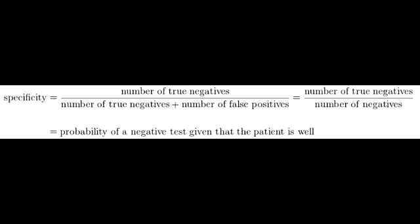The mnemonic to remember specificity is NIH (negative in health) and SPIN (specificity rules in disease). In 100% specificity, false positive is 0, so all positives must be true positives. The equation TN over (TN + 0) = 1, giving 100% specificity.